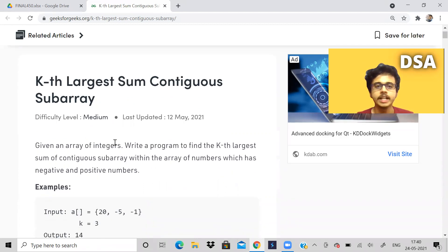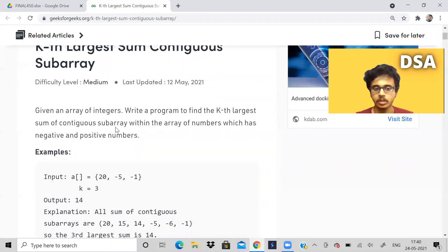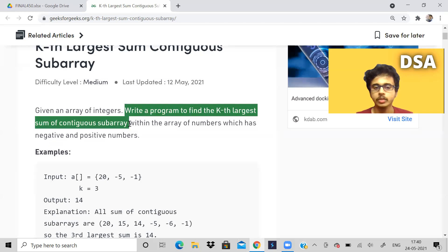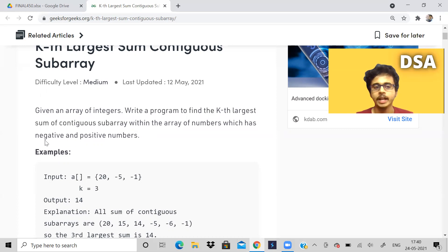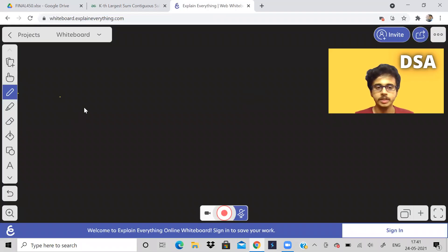Let us see what the problem is. Given an array of integers, we have to find the kth largest sum of contiguous subarray. The problem statement is simple, you can read it. The array will contain negative and positive numbers, which will not affect us in a big way.